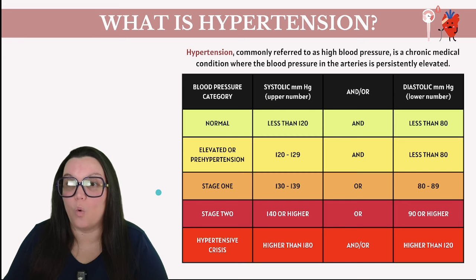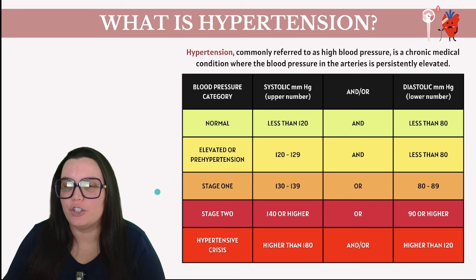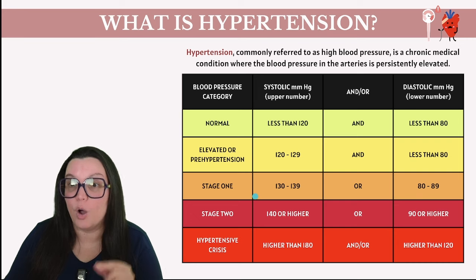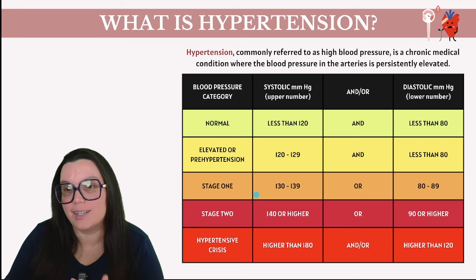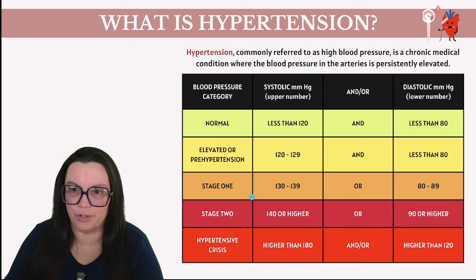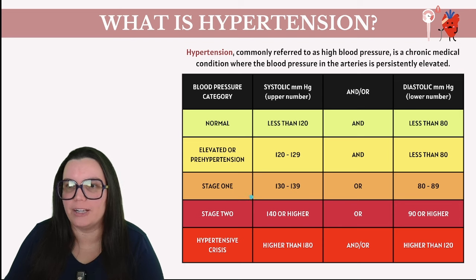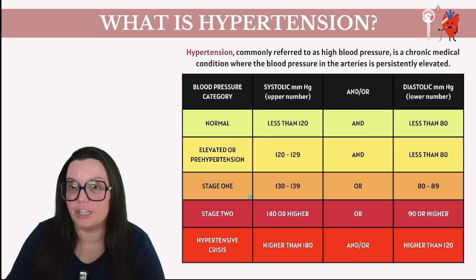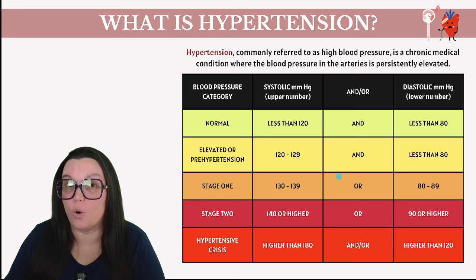Now let's talk about stage one hypertension — this is when things get a little more serious. You're looking at systolic pressures between 130 and 139, or a diastolic pressure that ranges between 80 and 89 mmHg. Here's where you can experience either a mix of both systolic and diastolic hypertension, or they could just be isolated. That's where we're seeing the word 'or' in our chart.